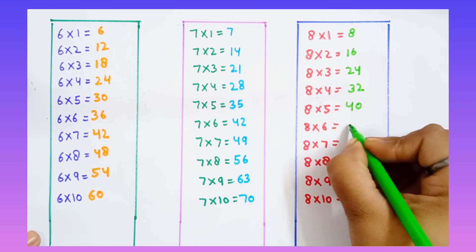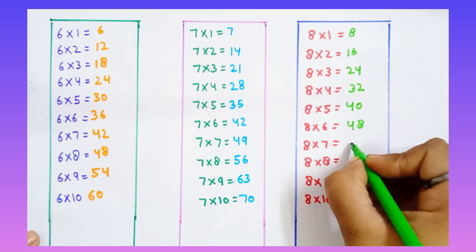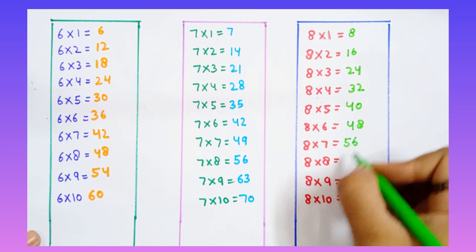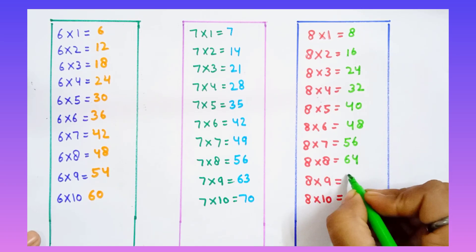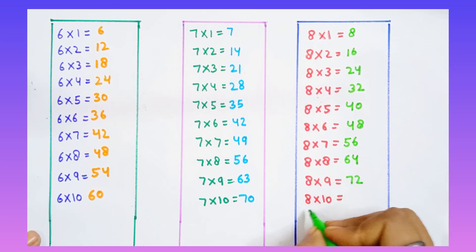8 sixes are 48. 8 sevens are 56. 8 eights are 64. 8 nines are 72. 8 tens are 80.